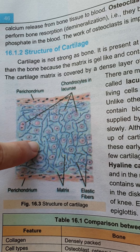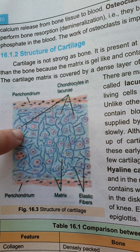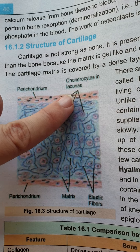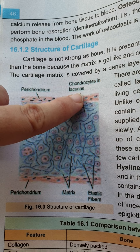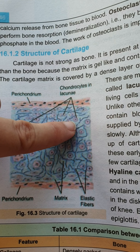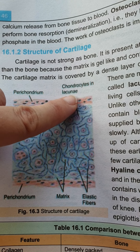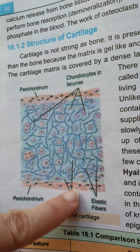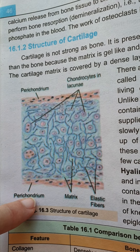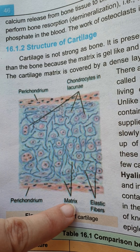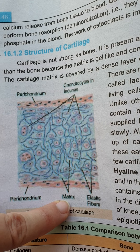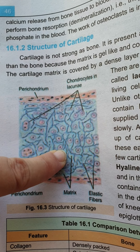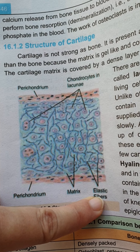The matrix consists of proteinaceous gel-like material. Inside it, fibers are present, and special cells are found within these fibers. The cells of cartilage are known as chondrocytes. The specific spaces where chondrocytes are present are known as lacunae. The outer connective tissue surrounding the cartilage is known as perichondrium.